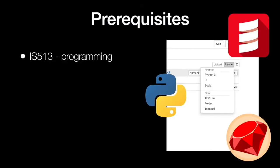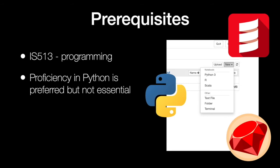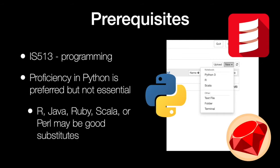In terms of prerequisites, there are three. IS-513, which is primarily programming — Programming for Informatics. For this class you need some programming proficiency. A proficiency in Python is preferred, but the language is not essential. You are welcome to use R, Java, Ruby, Scala, or any other moderately mainstream language that I can understand and that won't be too cumbersome to run or analyze for your semester project.